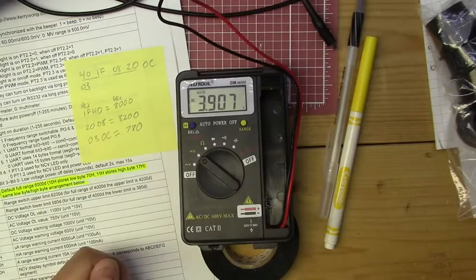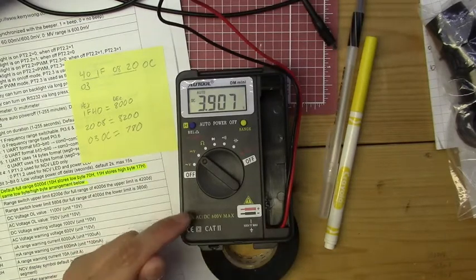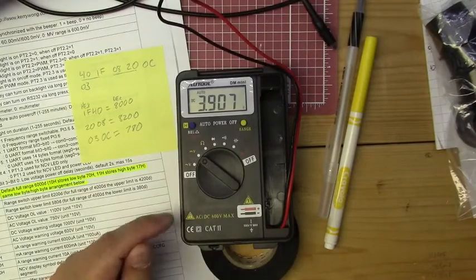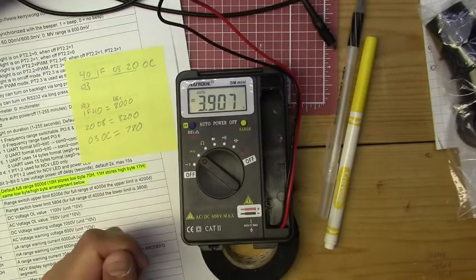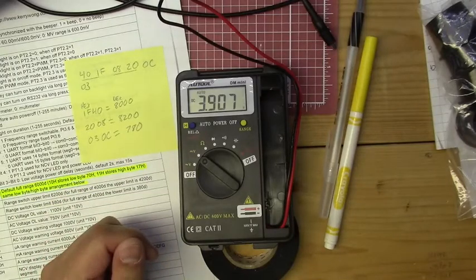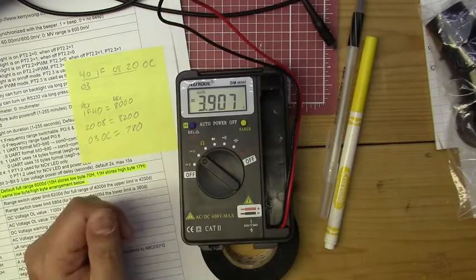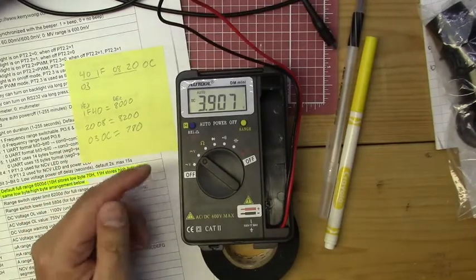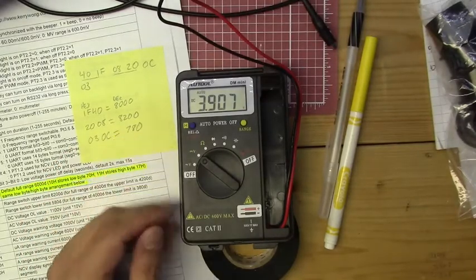You may have seen a previous video where I reviewed this little multimeter here. I guess it's best known as the Victor VC921. This one, I believe, is the same meter, just branded under a different name.